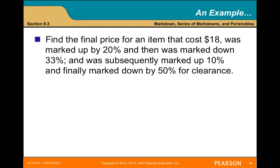For markups, multiply the base by one plus the rate of markup — for example, 10 dollars times 1.20 for a 20% markup. For markdowns, multiply the base by the complement of the markdown rate. Find the final price for an item that cost $18, was marked up 20%, then marked down 33%, then marked up 10%, and finally marked down 50% for clearance — working that out gives $7.91.